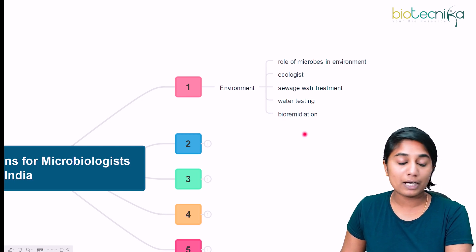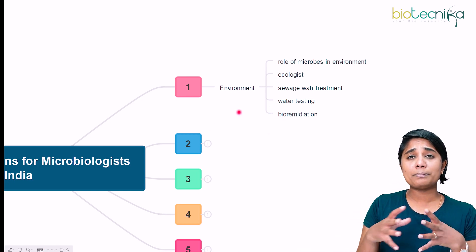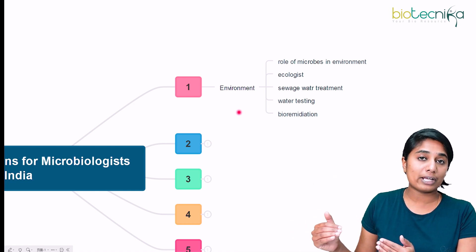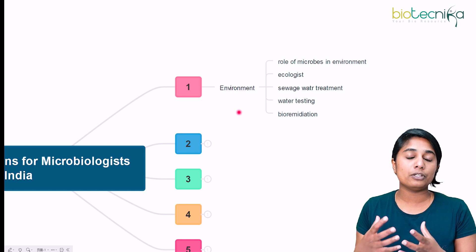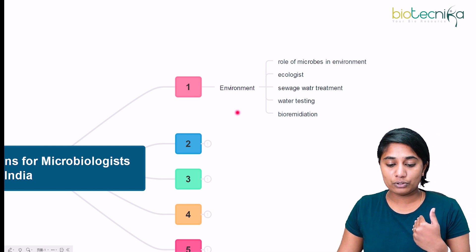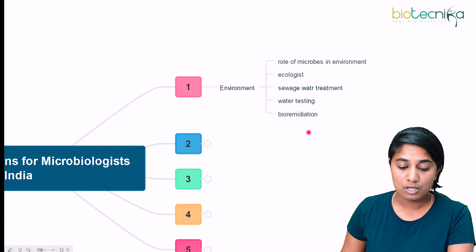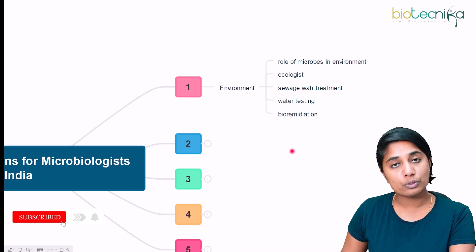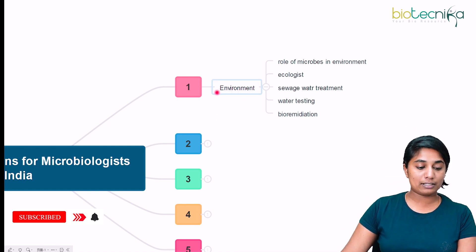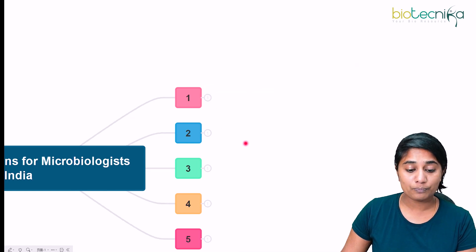The last role in the environment sector is bioremediation — the use of biological agents like microorganisms for reducing or remediating pollution that has already been caused. So these are the different roles you can play in the environment sector as a microbiologist. That was the first career option.